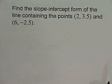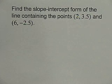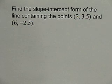Why don't you go ahead and take a look at this next example on your own. You're asked to find the slope-intercept form of the line containing the points 2, 3.5 and 6, negative 2.5. Give this one a try and then check back with me when you've completed it.